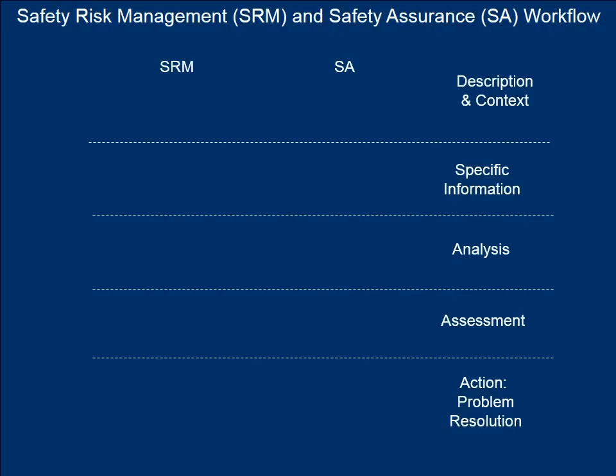Step two is to gather information about the system elements that are relevant to decisions to be made and actions to be taken — specific information. Step three is to analyze the data; this is a human activity used to make sense of the data — analysis. Step four, assessment, is applying judgments based on the available data and the decision-maker's experience. Is the situation acceptable or unacceptable? Step five is where a decision is made and an action taken. Inaction — to do nothing — is sometimes an acceptable action.